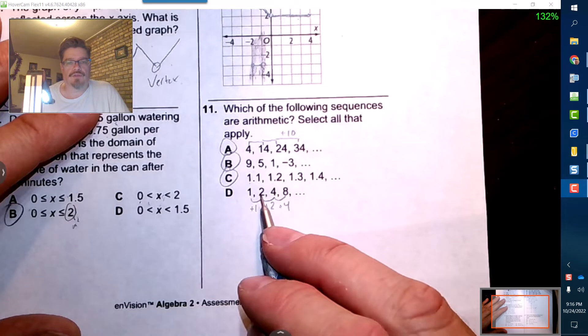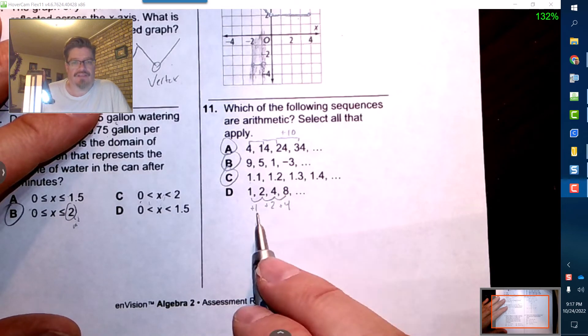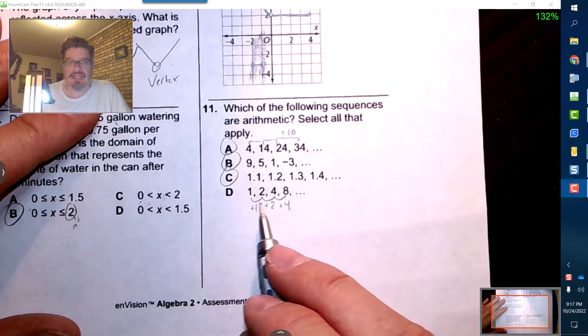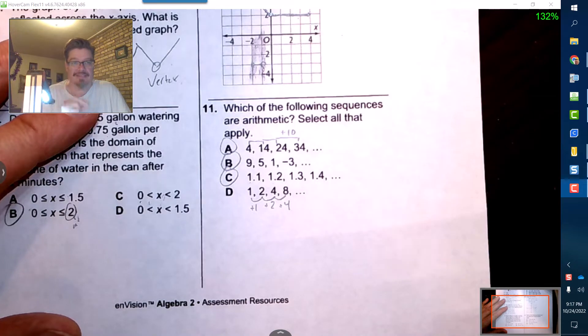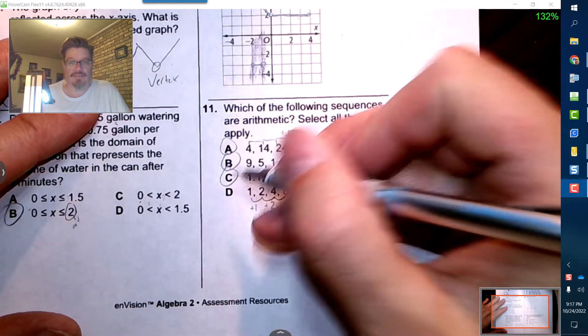It should have been 1, 2, 3, 4. Now there's definitely a pattern here but it's not arithmetic. Arithmetic is the simplest of patterns, it goes up or down by a consistent rate. So A, B, and C are the answers to that.